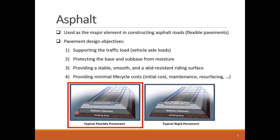Asphalt is a major element in constructing flexible pavements. This pavement type gained its name from the viscosity and flexibility of asphalt as its binding material, compared to rigid pavements made from plain cement concrete. The pavements are designed with the objectives of supporting the traffic load — mainly truck axle loads — protecting the aggregate sub-base and base from moisture and rain runoff, providing good riding quality, and minimizing the pavement costs over its life cycle.